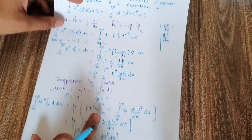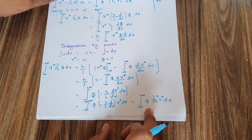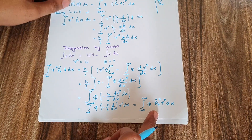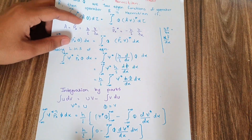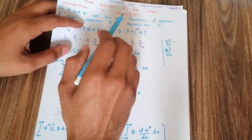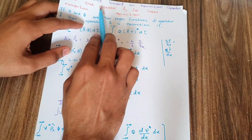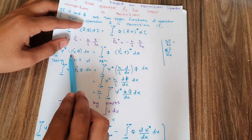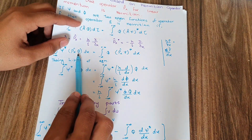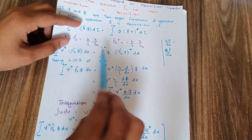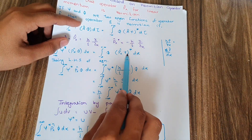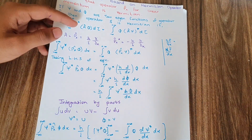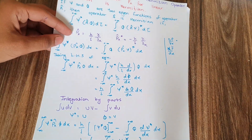Since I took the left-hand side of the equation and proved it to be equal to the right-hand side, I can say that the linear momentum operator px is a Hermitian operator — the operator applied on phi gives the same result as the operator applied on psi*, satisfying the Hermitian condition. That was all for today's video — see you in the next video.